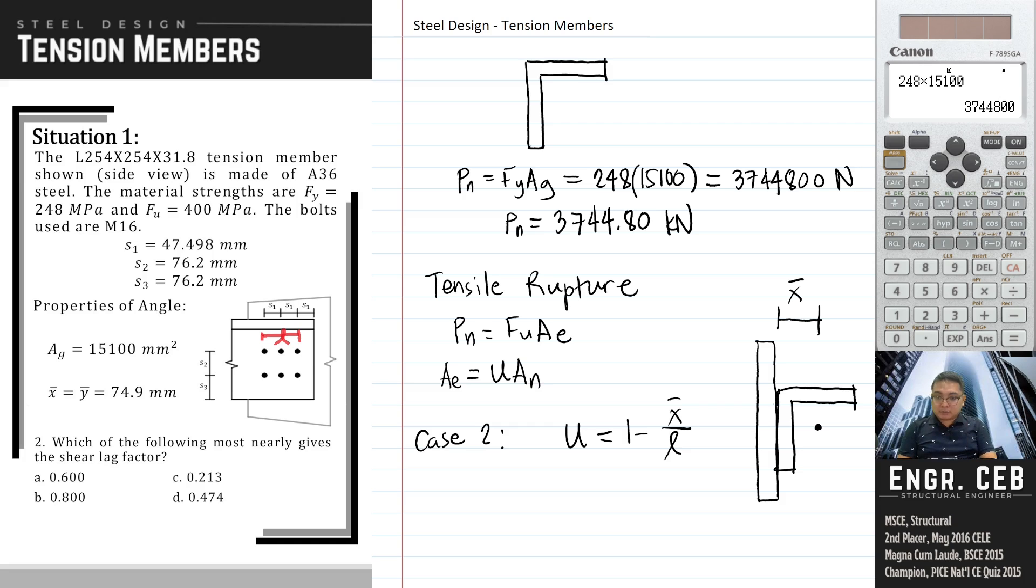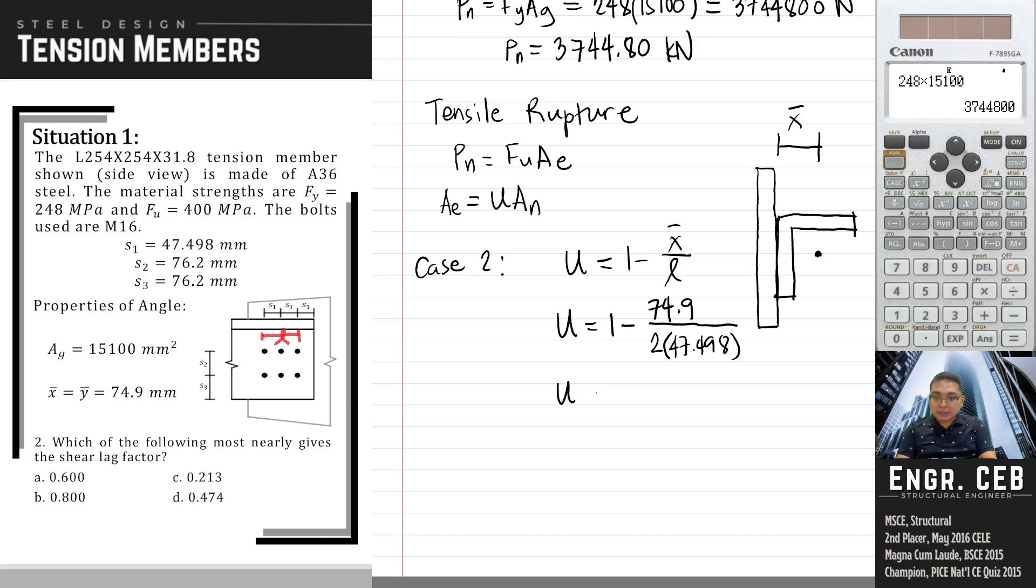If we're going to compute our shear lag factor, we have U equals 1 minus 74.9 divided by L. In the figure, L is equivalent to 2 times the spacing between the bolts, which is S1, and it is given as 47.498 millimeters. Therefore, we can now solve for the shear lag factor, and that is 1 minus 74.9 over 2 times 47.498. So that is 0.211.